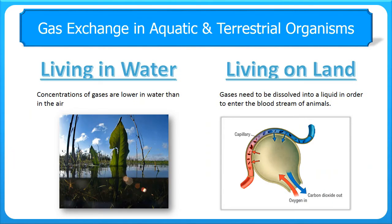There are two main differences or pressures that exist on organisms, whether they're in water or on land. In water, the concentration of gases is quite low compared to that in the air, simply because the water takes up volume or space, leaving a lower concentration of gas. So there's less gas available for organisms living in water — a challenge they have to overcome to get sufficient gases to supply their cellular requirements.